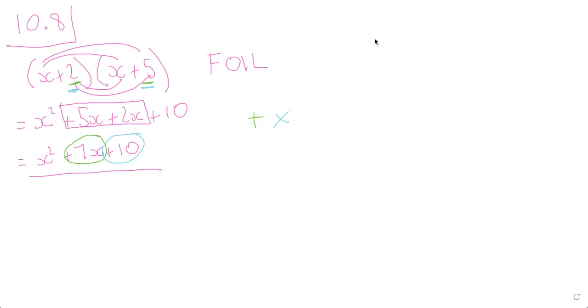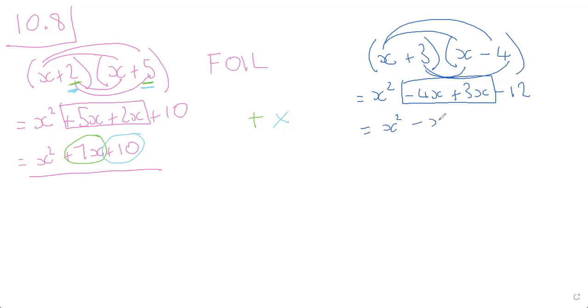So let's do one where we have different signs. So if I have (x+3)(x-4). We're going to do the same thing. Let's do the first ones. x², and then the outside ones. Watch our sign now. This is x times minus 4, so minus 4x, then the inside plus 3x, and then the last two, minus 12 because it's 3 times negative 4. Now we still have two like terms that we're going to put together but we need to watch our signs. So negative 4 plus 3 is minus 1.